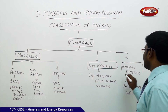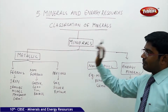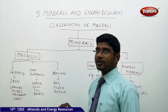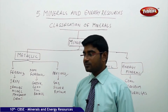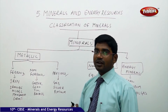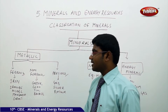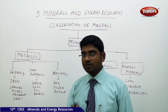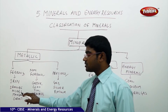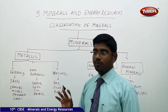The first major division is metallic and non-metallic. Within metallic minerals, we have ferrous, non-ferrous, and precious minerals. Ferrous refers to iron — minerals that contain iron or are iron itself. Examples of ferrous minerals include iron, iron ore, nickel, manganese, and cobalt.